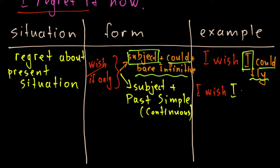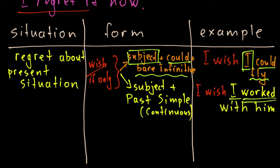Using the second structure, it would be: 'I wish I worked with him.' So we have subject + past simple. The real situation is that I cannot fly, or I don't work with this person in the present. That's all about present situation — pay attention, this refers to the present.